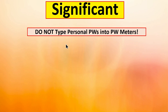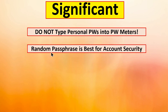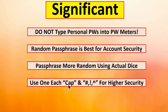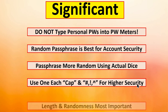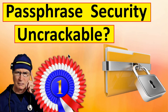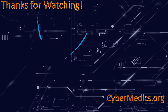Going over some of the significant things: do not type your personal passwords into the password meters — I only used these for demonstration purposes. I personally do not trust any site with my passwords unless it's where I'm going to credential my account. You can use them to grade the methodology, but do not type your real passwords into password grading sites. Random passphrases are best for account security. If you use physical dice, you'll get a more random pattern than using the dice websites. We demonstrated how just capitalizing one letter and using one special character would increase the security of your passphrase significantly. Length and randomness is the most important thing when generating login credentials. That's a wrap on passphrase security and how to create a secure login credential.